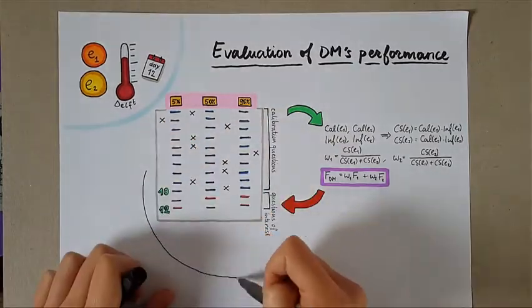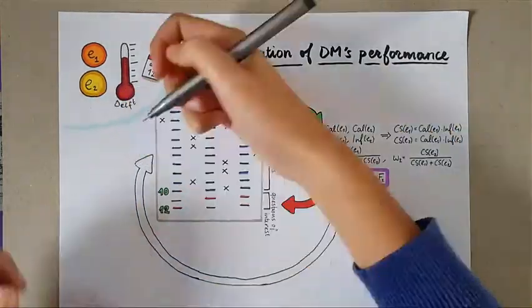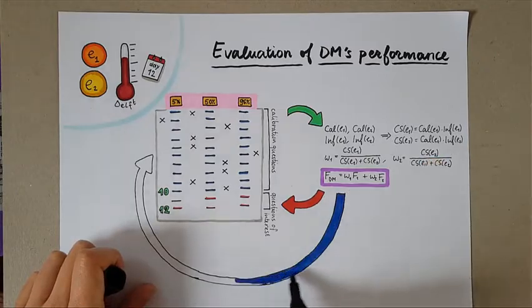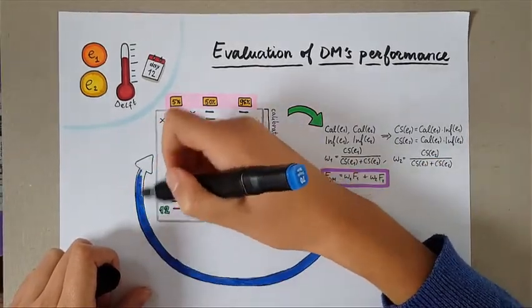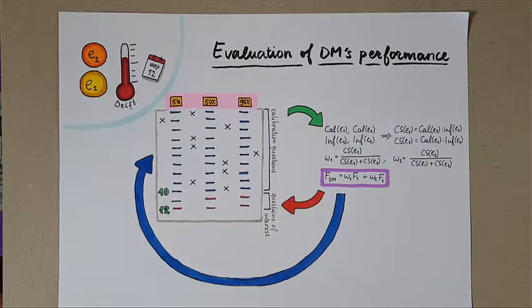But in fact we can apply the same procedure not only to the questions of interest but also to the calibration questions. That is we can obtain quantiles of the decision-maker's distributions for the calibration questions, which represents the assessments of the decision-maker for the 10 calibration questions.